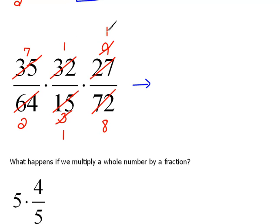7 times 1 times 1 would be 7. And 2 times 1 times 8 would be 16. So, our final answer here would be 7 over 16.